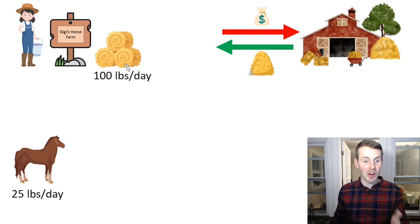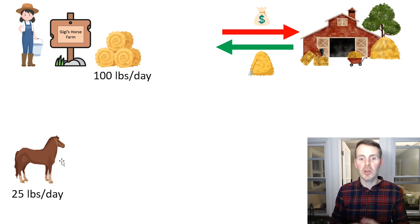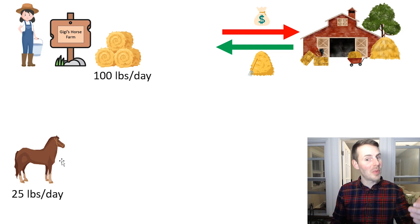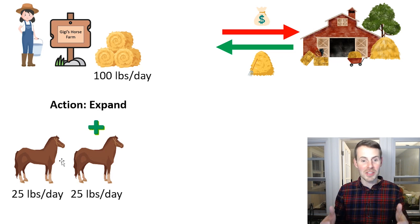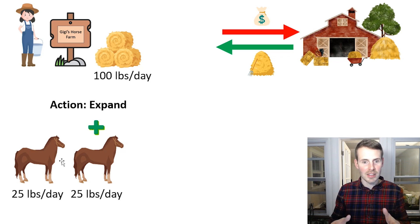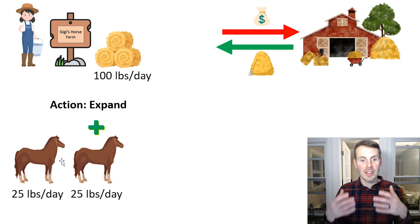This is perfect for Gigi because her horse, in giving its sleigh rides every day, needs about 25 pounds of hay per day in order to sustain its high performance. Right off the bat, Gigi's getting 100 pounds of hay a day, but her horse only requires 25 pounds per day. She sees an opportunity to expand her business, so her first step is to get another horse. She now has two horses. She runs the same analysis — two horses giving sleigh rides every day, she's making more money, and she notices that she still has excess hay.